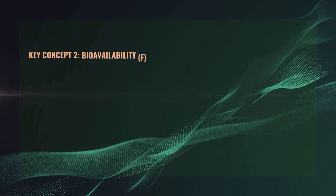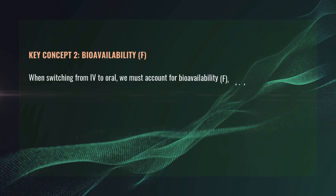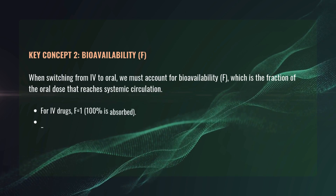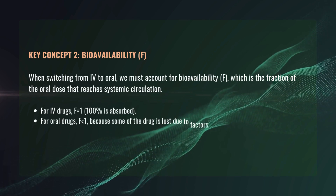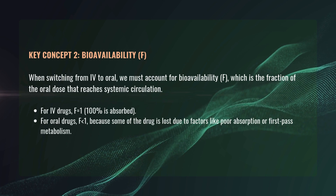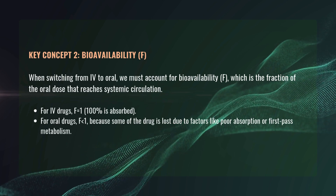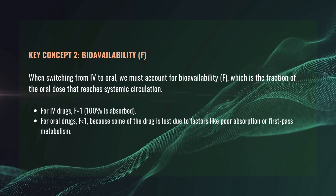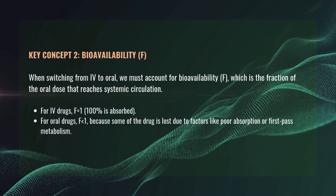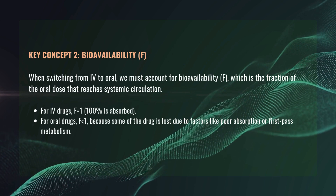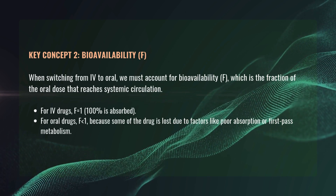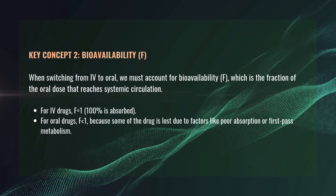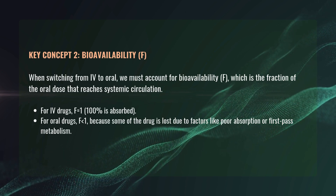Now let's focus on the second key concept: bioavailability. When switching from IV to oral, we must account for bioavailability, which is the fraction of the oral dose that reaches systemic circulation. For IV drugs, F equals 1 — 100% is absorbed. For oral drugs, F is less than 1, because some of the drug is lost due to factors like poor absorption or first-pass metabolism.